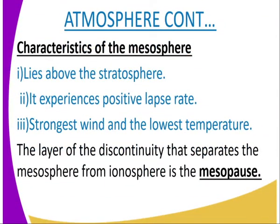The mesosphere rises above the stratosphere. It experiences a positive lapse rate, meaning temperatures decrease with increase in altitude. It also experiences the strongest winds and the lowest temperatures. The layer of discontinuity that separates the mesosphere from the ionosphere is called the mesopause.